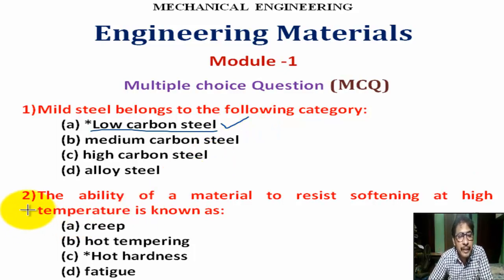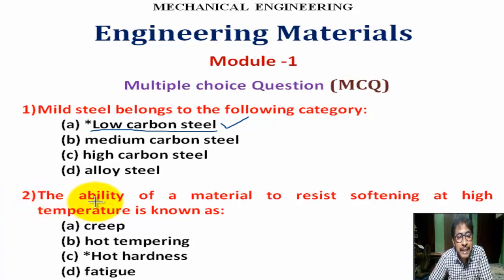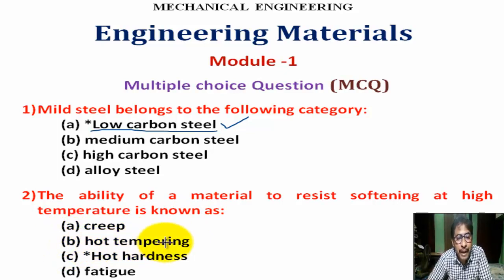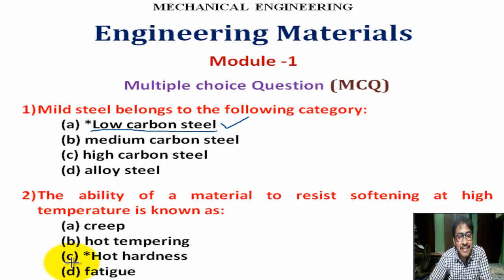Question number 2: The ability of a material to resist softening at high temperature is known as — Option A: creep. Option B: hot tempering. Option C: hot hardness. Option D: fatigue. Correct answer is Option C — hot hardness.